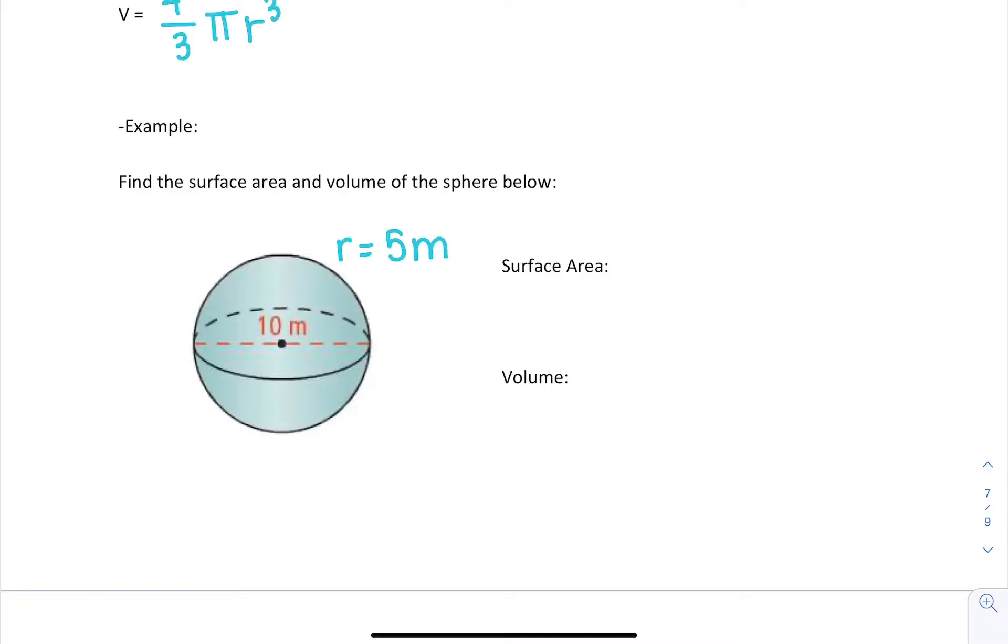Now the surface area is equal to 4πr², so we're going to say that is 4π times 5², which will be equal to 100π meters squared.